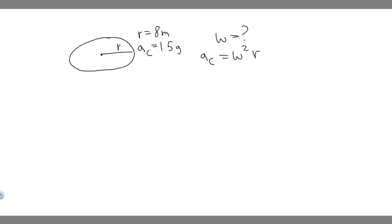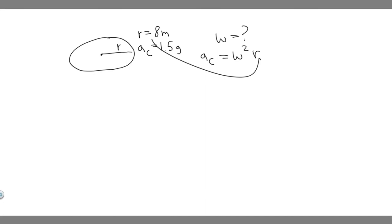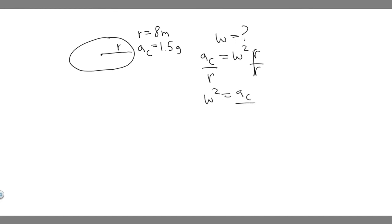This formula relates the variables we're given. We're given the centripetal acceleration, which is 1.5 times g, and the radius. To solve for omega, divide both sides by r to get omega squared equals a_c over r, then take the square root of both sides to get omega equals the square root of the centripetal acceleration divided by the radius.